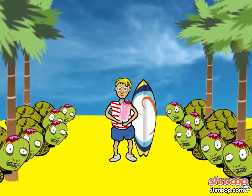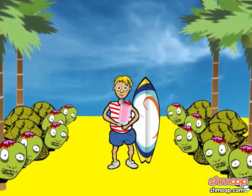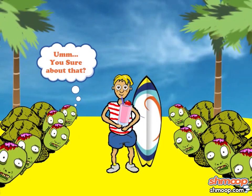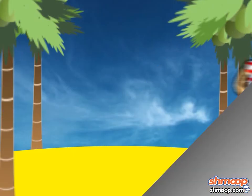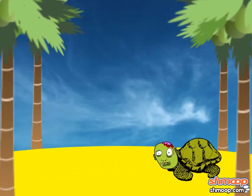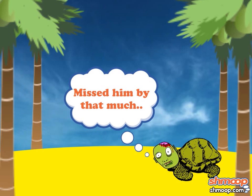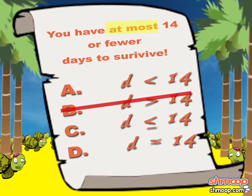Don't worry, we have plenty of time to break this down. "At most" can also mean 14 or fewer. B shows greater than, so that one's out. D is equals, so that one's out too. You could have fewer than 14 days, so you better play it safe. 14 or fewer also means that D is less than or equal to 14. So the answer is C.